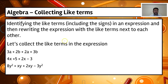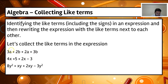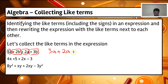Let's have a look at collecting the like terms in the following expressions. We've got 3a plus 2b plus 2a plus 3b. We can see we've got 3a and 2a — I'll circle those. And we've also got 2b and 3b — I'll put a square around those. So to simplify, we bring the a's to the front: 3a plus 2a, and then plus 2b plus 3b. That expression has just been rewritten so that our like terms are grouped together.